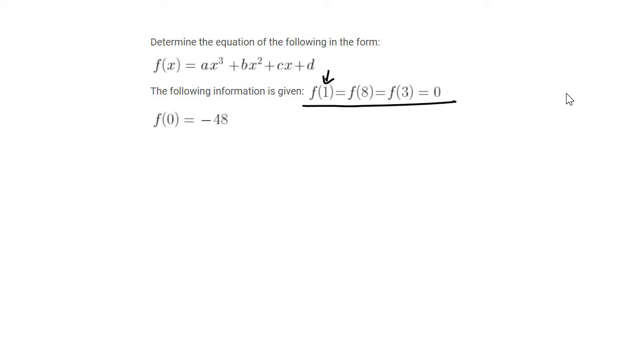So we know that this 1 is an x value. We know it always says f of x, so that's an x value. So they're saying that when x is 1, when x is 8, and when x is 3, all of those have an answer, which is like your y value, which is 0.